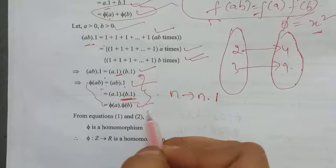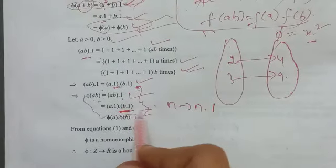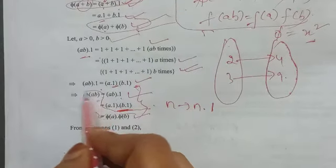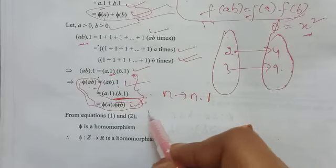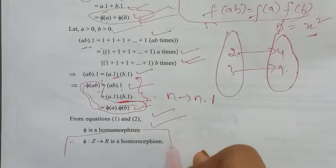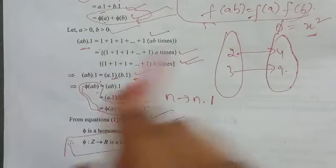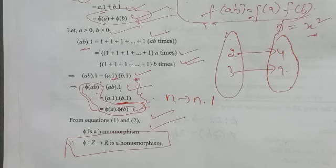Therefore, from conditions 1 and 2, we can tell that phi is a ring homomorphism. Therefore, phi is a function from Z to R and is a homomorphism. I hope you understood. If you like this video, definitely like it, comment, and subscribe to the channel. Thanks for watching. Till then.